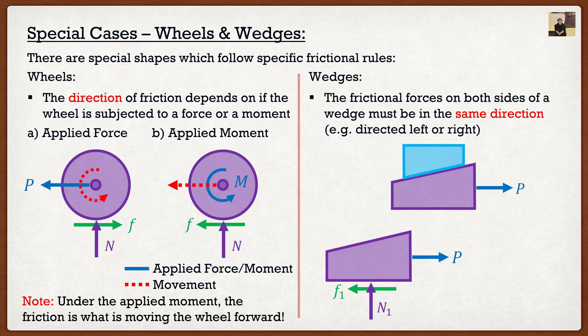But remember that we have that second surface on the incline also creating friction. And this is where students might go, well I don't know which way that one goes. Well again, the key to wedges is the frictional forces must be in the same direction. So F1 is going to the left. Well, then F2 must also go to the left.